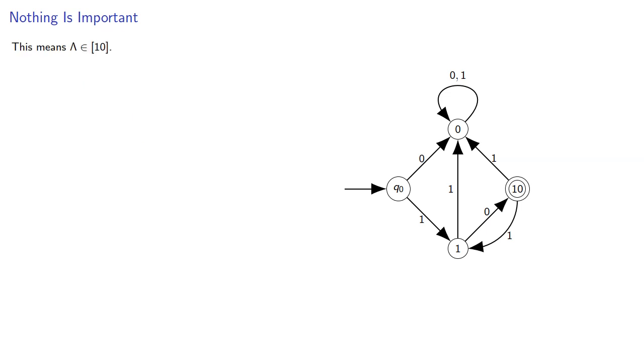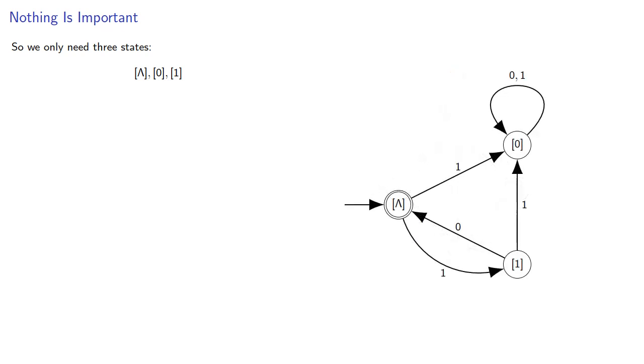And so this means that the empty string is in the equivalence class of 10. And since we use an element of an equivalence class as our class representative, the equivalence class of 10 is the same as the equivalence class of λ, which will be our initial state q0. So we only need three states: the equivalence class of λ, the equivalence class of 0, and the equivalence class of 1. And the equivalence class of 10 is the same as our equivalence class of λ, which is our initial state.